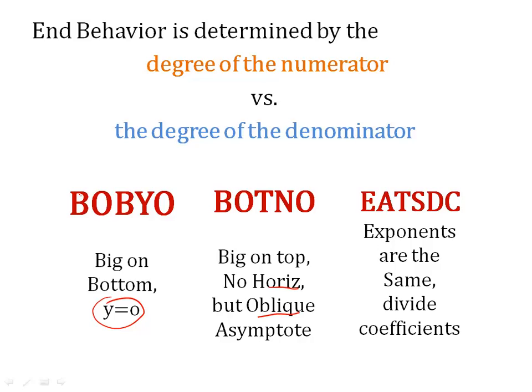The other option is, what if the exponents are the same? Then you divide the coefficients of that higher power. Lots of theory there. But I want you to get BOBYO BOTNO EATSDC. I'm going to show you examples of each type.